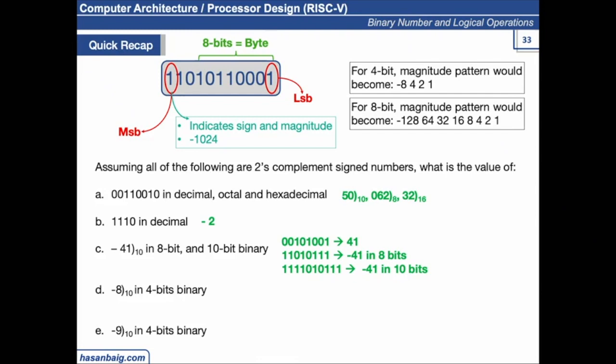If a number is positive and you need to extend to 10 bits, you add two more zeros on the left. If the number is negative, you replicate the sign bit — so you're replicating the sign for the positive case and the sign for the negative case as well.